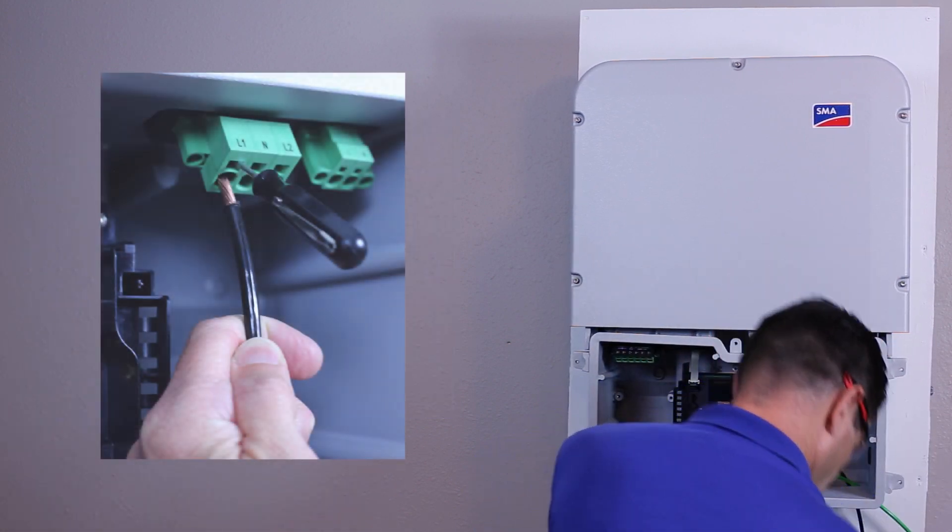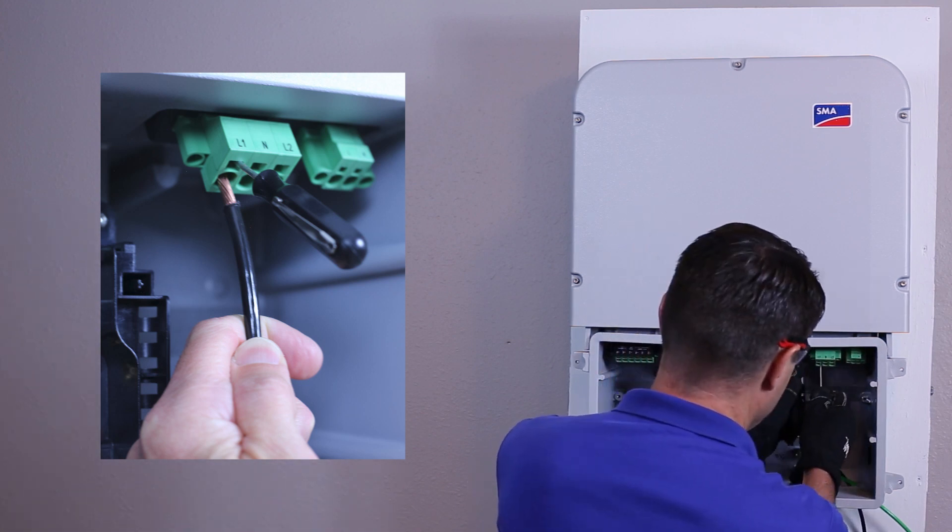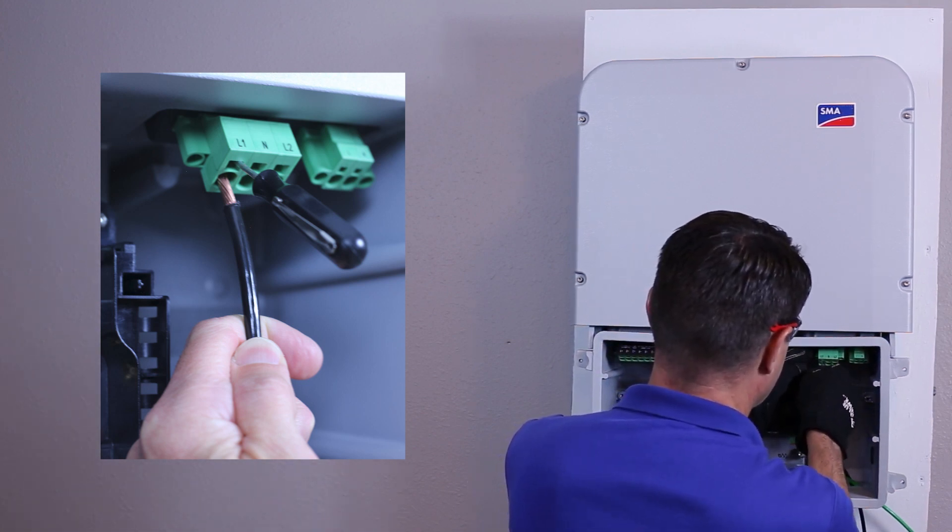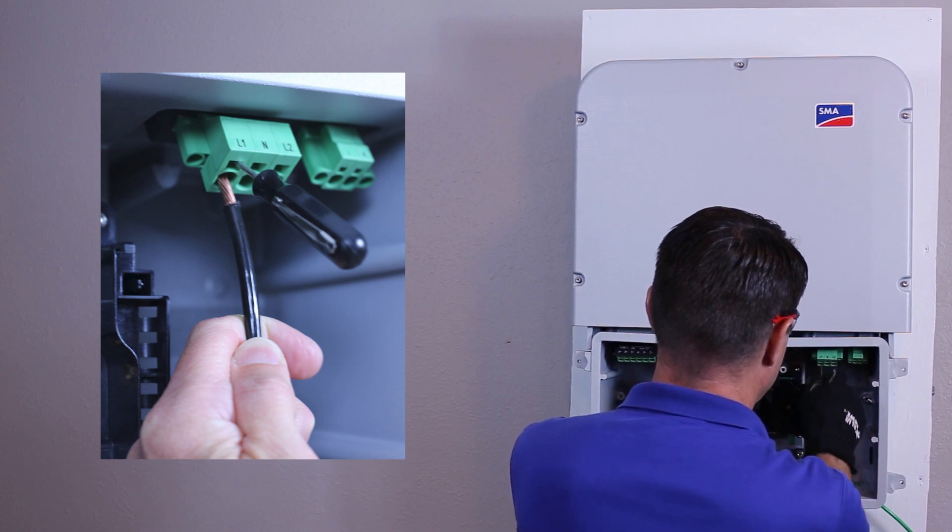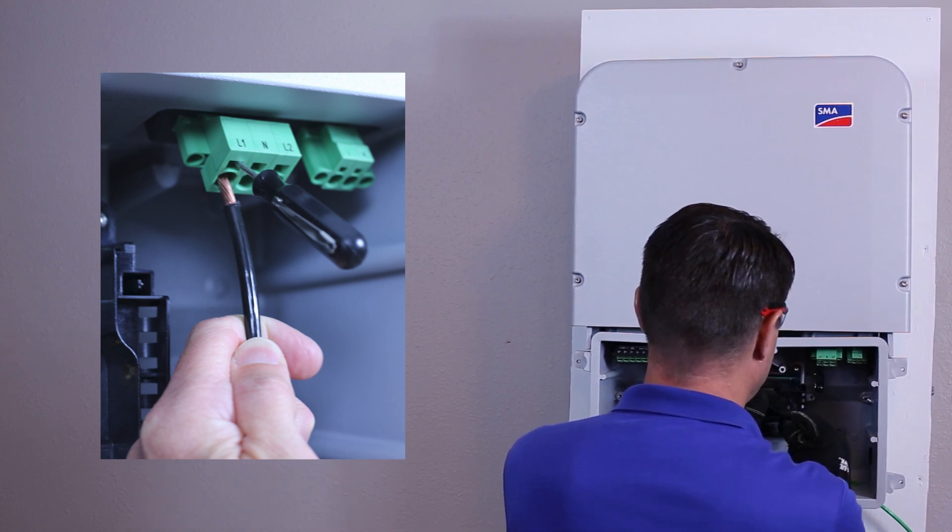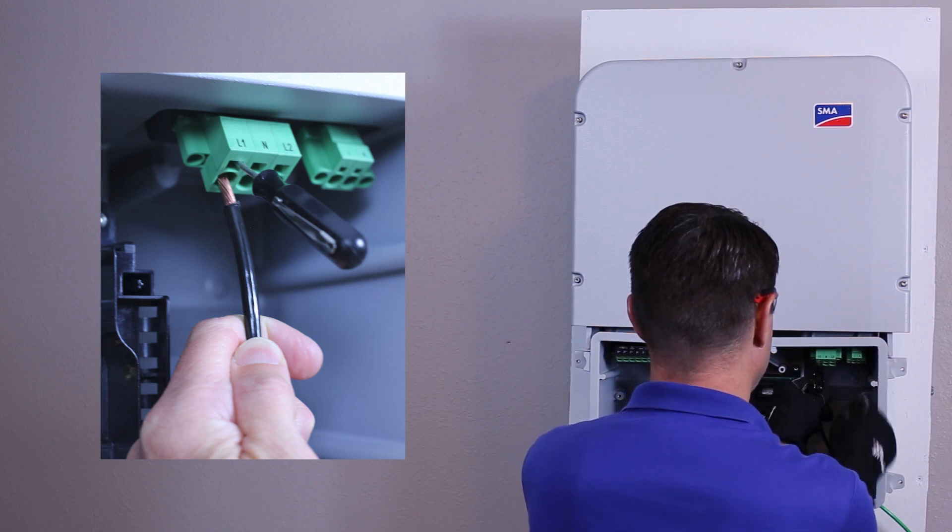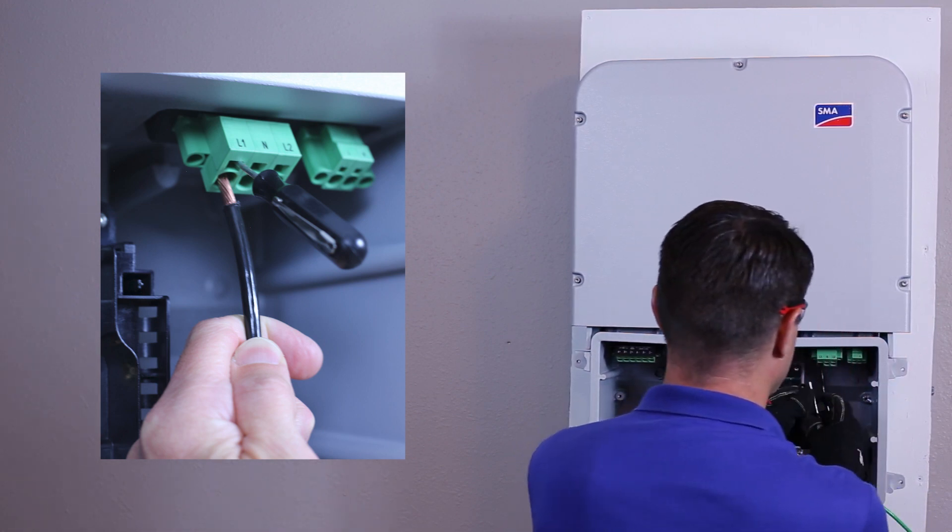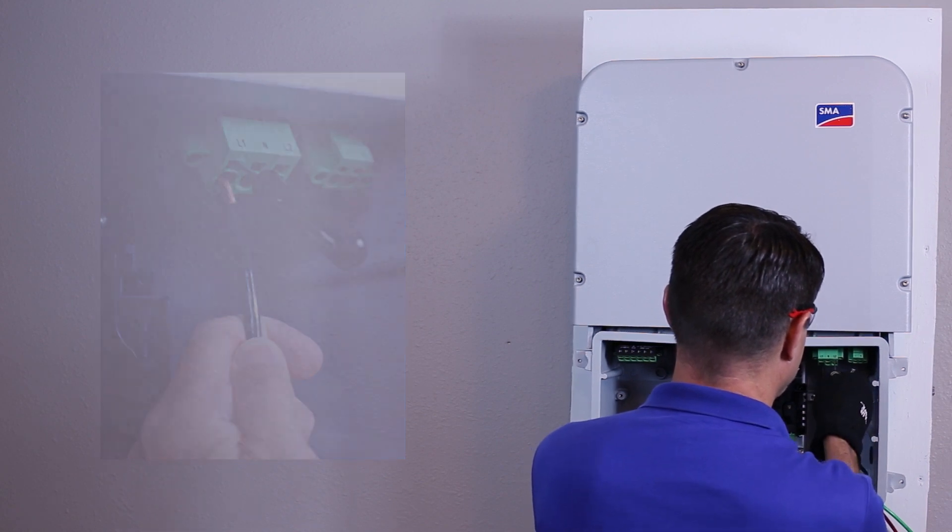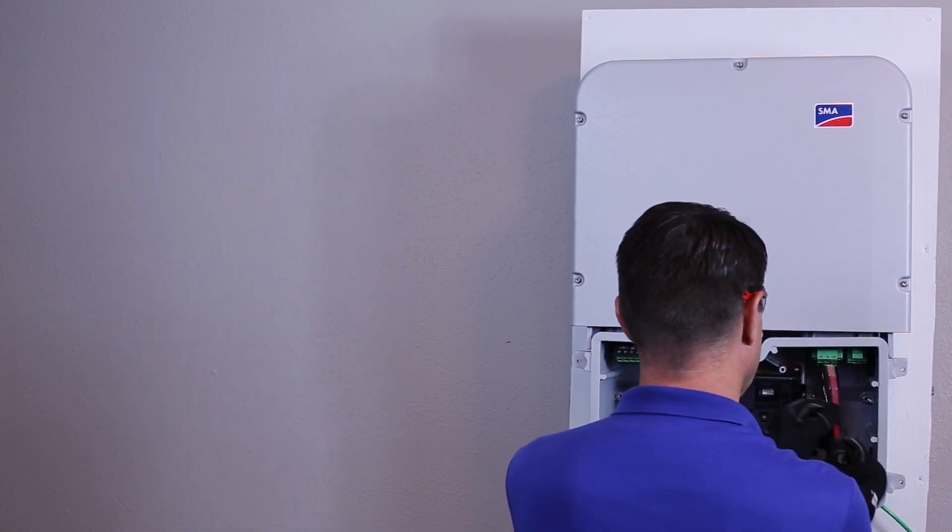When inserting the conductors into the AC and DC connection plugs, ensure that only the round holes at the back are used. A 5/32 inch standard screwdriver can be inserted into the small rectangular probe measurement port in front of the round hole to open the clamping terminal. This ensures no strands of the conductor are folded back when it is inserted. Remove the screwdriver and ensure the conductor is securely held.